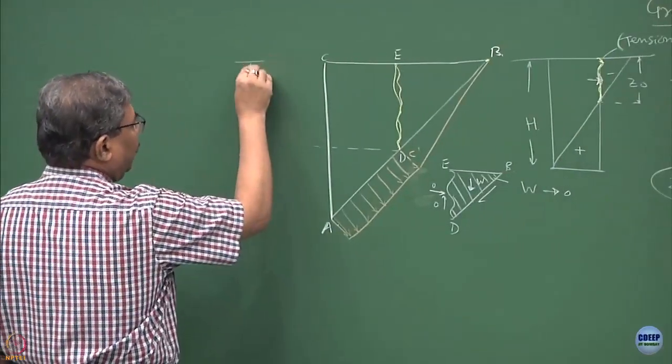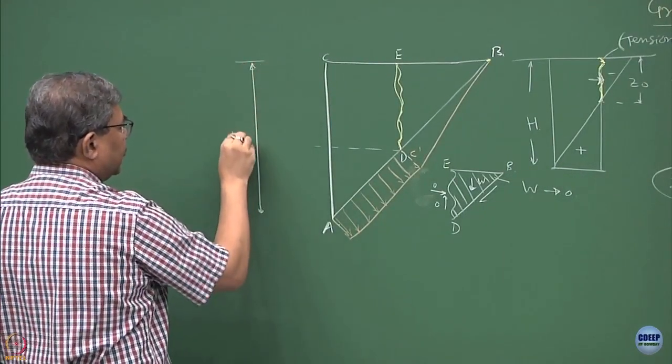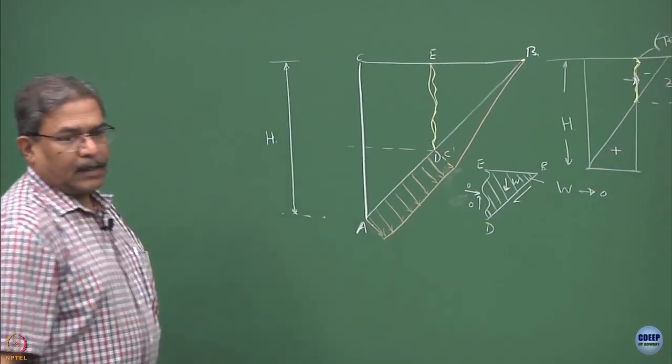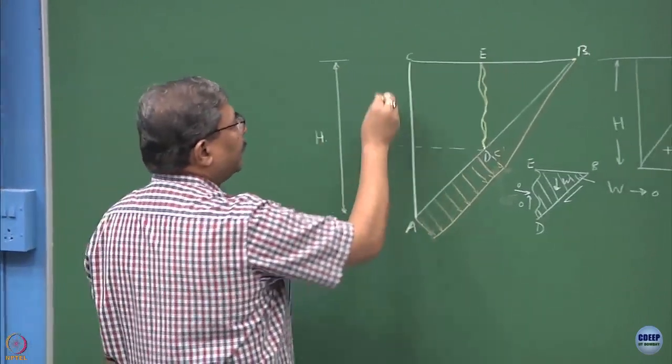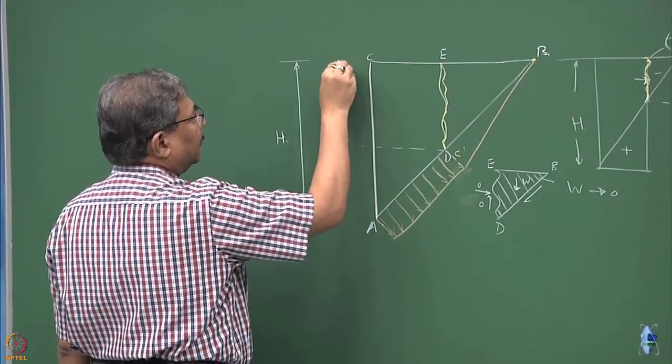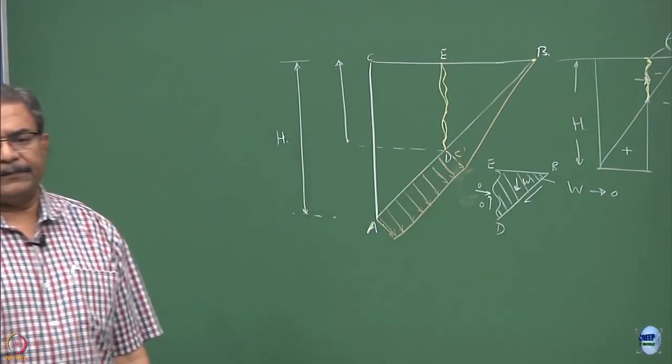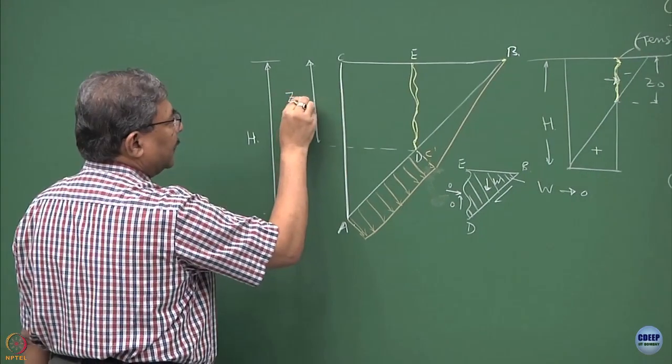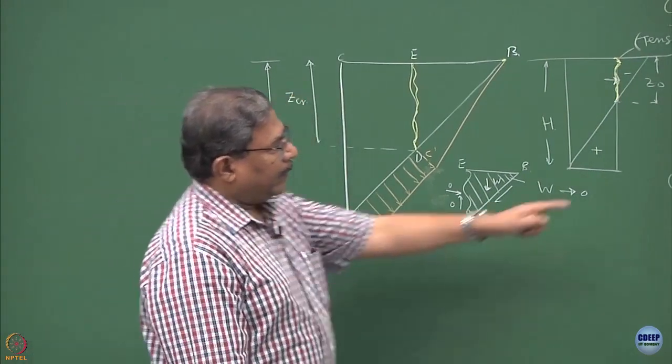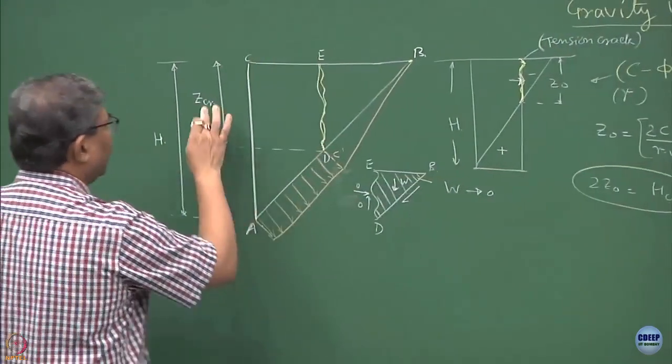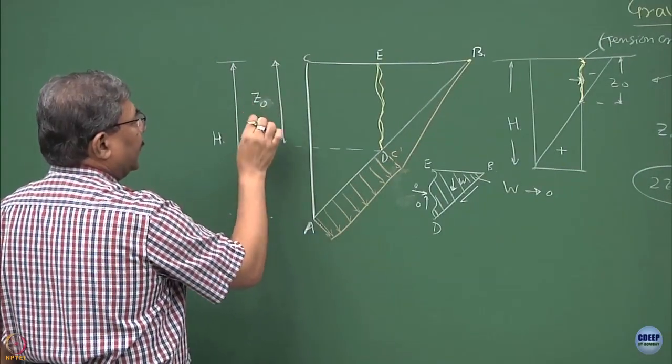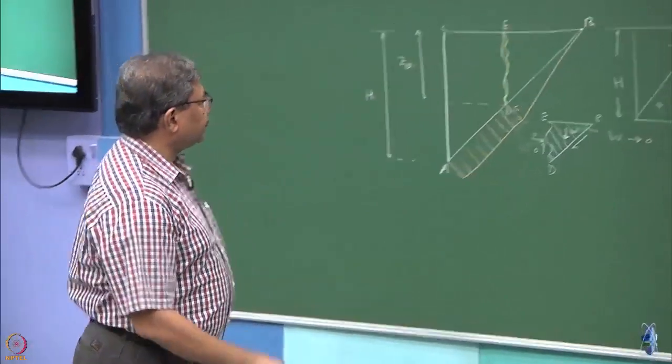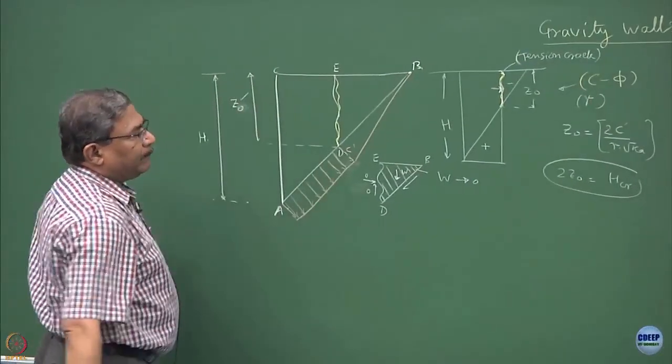What we will do is we will try to utilize these properties in such a manner that they could be useful to us. The total length of the wall or height of the wall is h. This we have computed as Z critical. So, this is your Z critical which I had defined as Z0 or let it be Z0 and this is equal to 2c prime by gamma root ka.